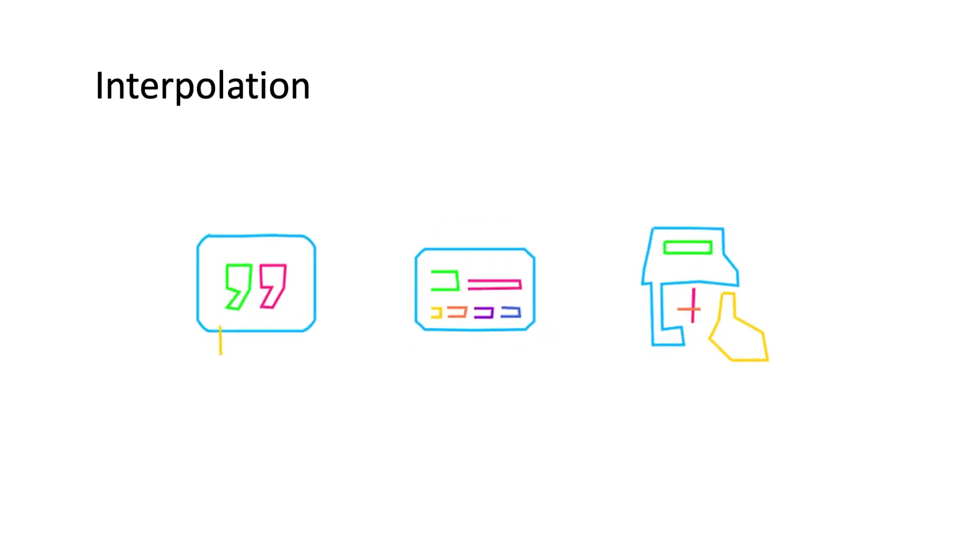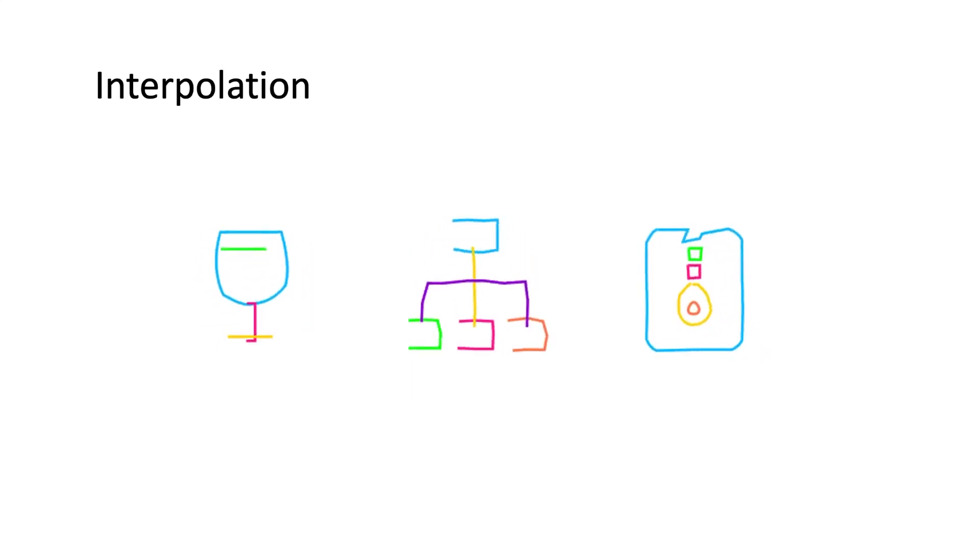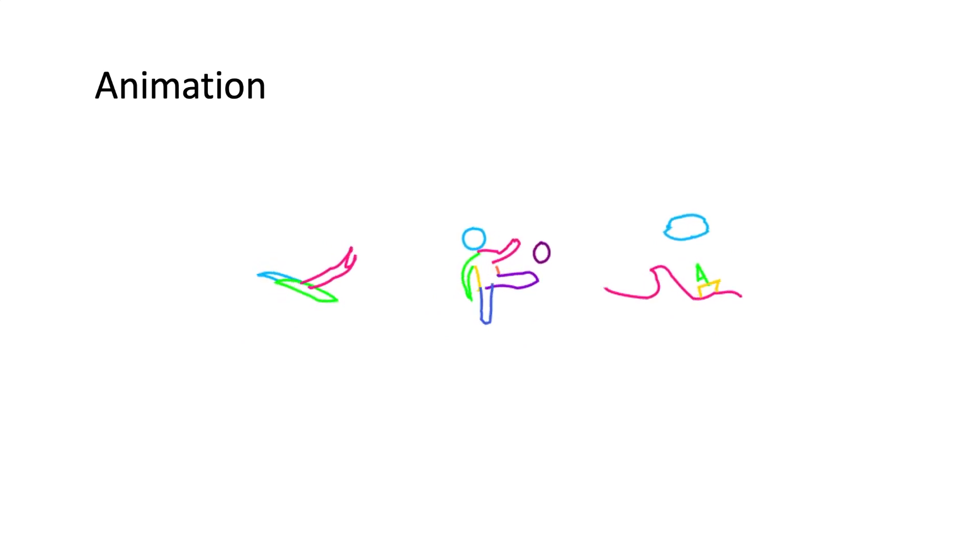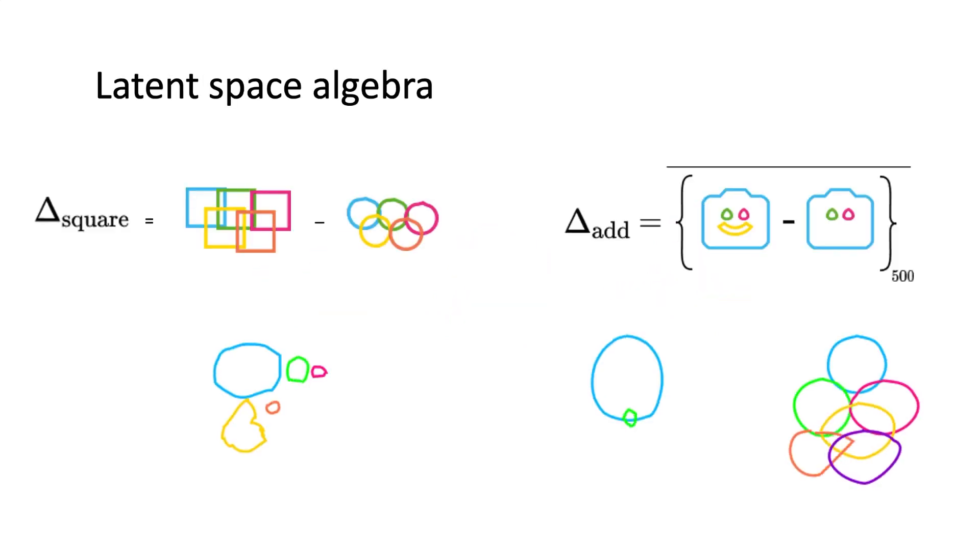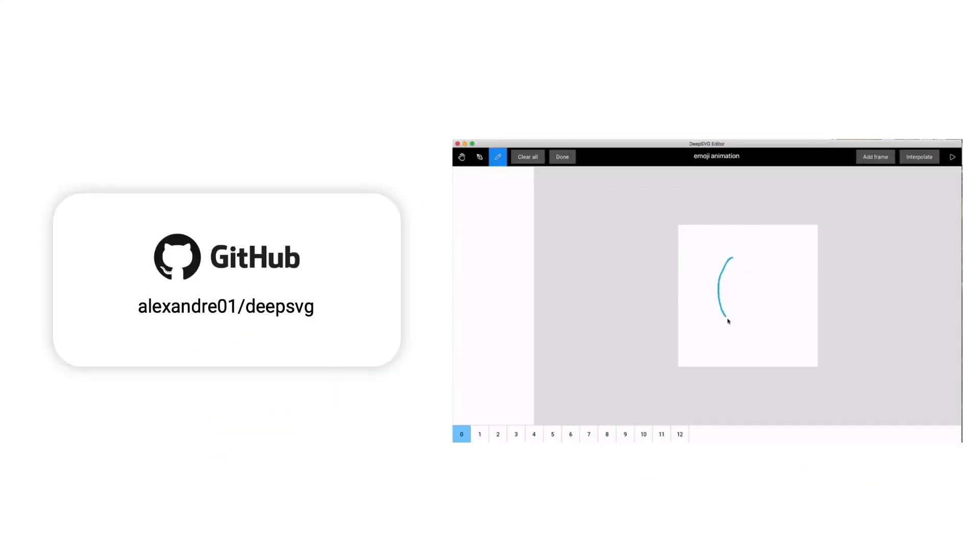Applications include interpolating between random pairs of icons, creating animations by interpolating between two user-drawn keyframes, and even manipulating SVGs in a semantically meaningful way by adding latent directions. Our code is available on GitHub, which additionally includes a demo graphical user interface.